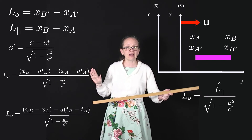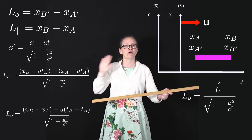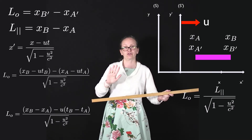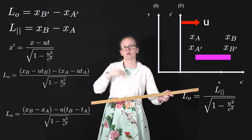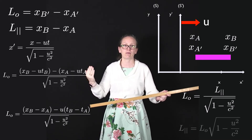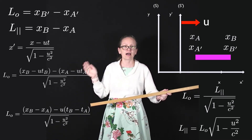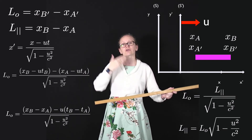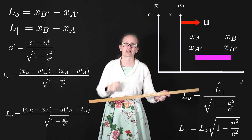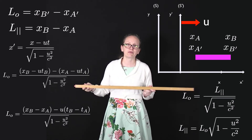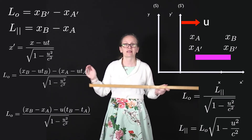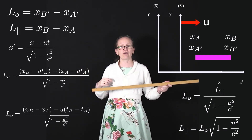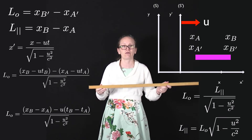So we can write that L₀ equals L-parallel divided by the square root of 1 minus u²/c², which rearranges to L-parallel equals L₀ times the square root of 1 minus u²/c². This is why this is known as length contraction: in the frame in which the stick is moving, lengths appear shorter by a factor of √(1 − u²/c²) compared to the rest length.